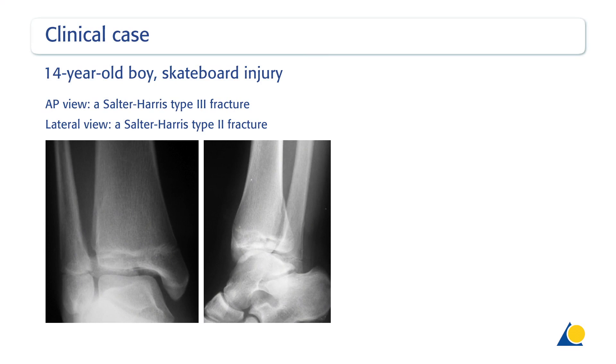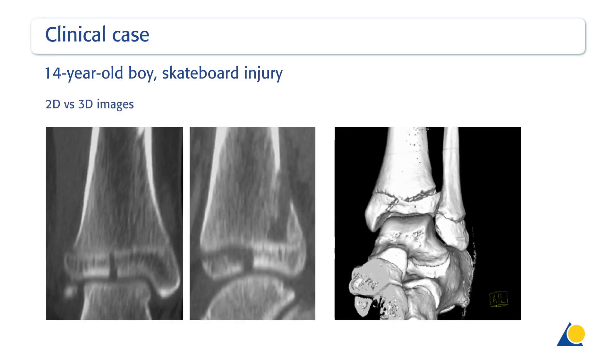In these x-rays of a 14-year-old boy, the AP view shows a Salter-Harris type 3 fracture. The lateral view shows a Salter-Harris type 2 fracture. The fracture pattern is highly suggestive of a triplane fracture. In this x-ray, the displacement of the fragment more than 2 mm is apparent. A CT scan was used for a more precise diagnosis.